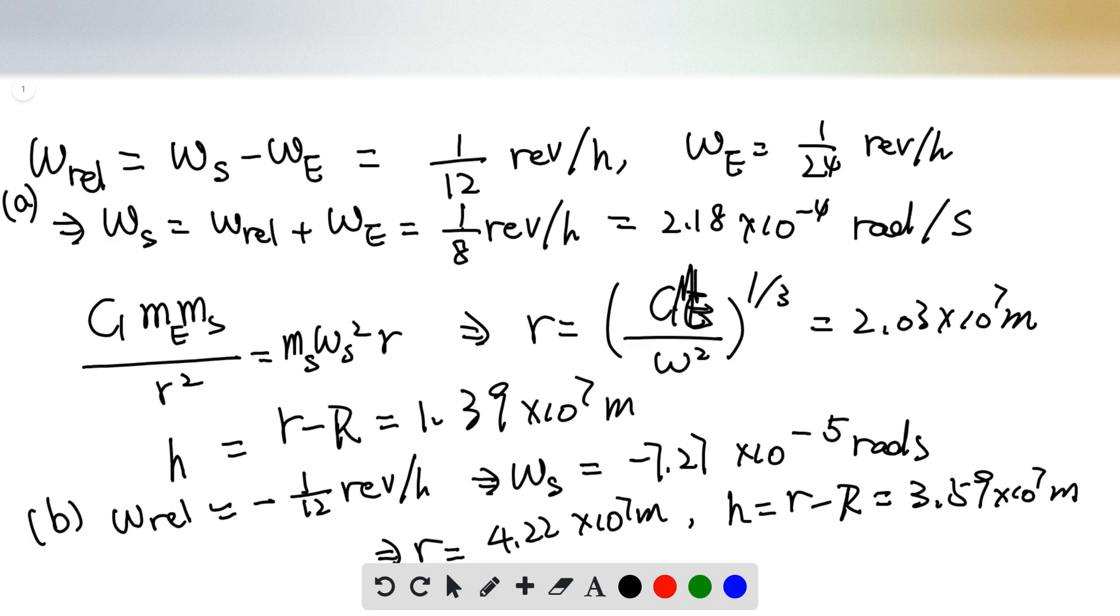So for question B, the satellite is moving in the opposite direction, so the relative angular velocity is negative.